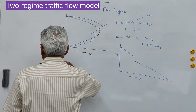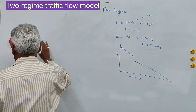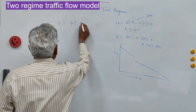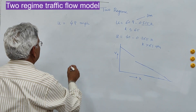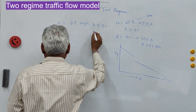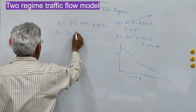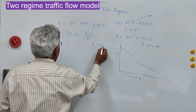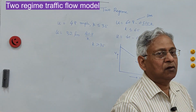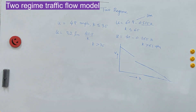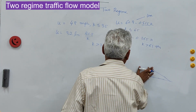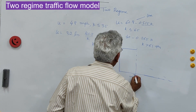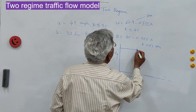There is also a modified Greenberg two-regime model: for k ≤ 35 vehicles per mile, u = 48 miles per hour (constant), and for k > 35 vehicles per mile, u = 32 · ln(145.5 / k). These are based on actual traffic data collected in the field. When you plot the speed-density curve, speed is constant at 48 up to a density of 35, and then it follows a logarithmic decline.